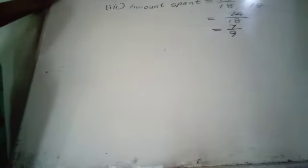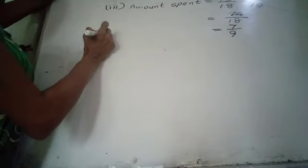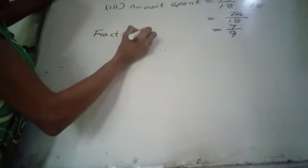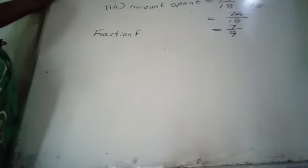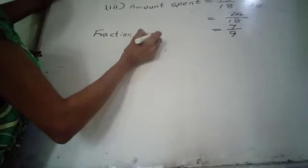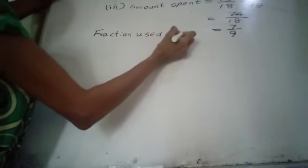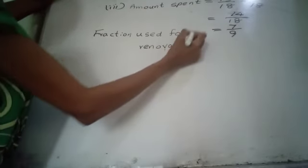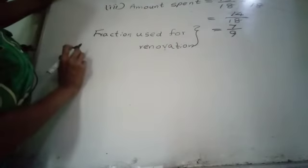Both numerator and denominator are divisible by 2. 14 divided by 2 is 7, and 18 divided by 2 is 9, giving 7 over 9. This is the fraction used for renovation.